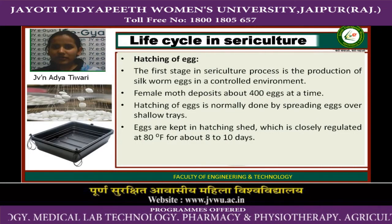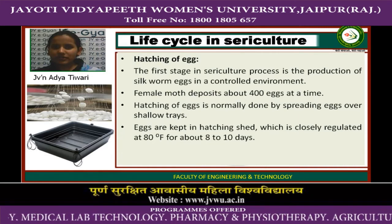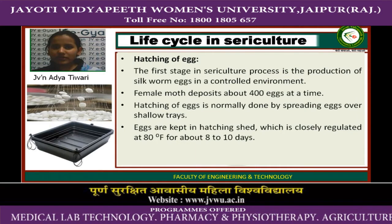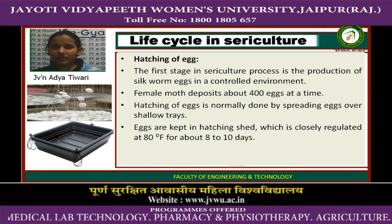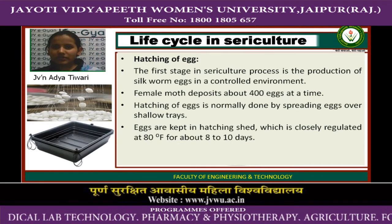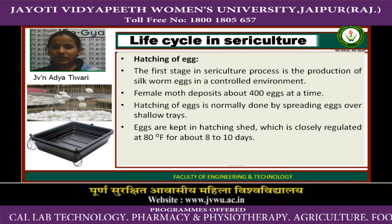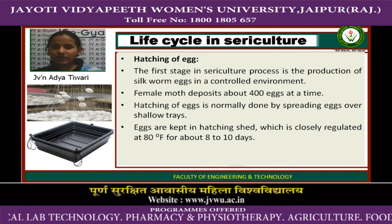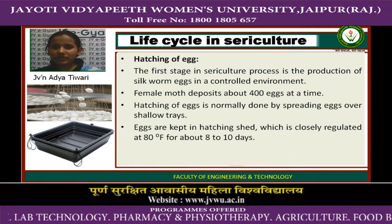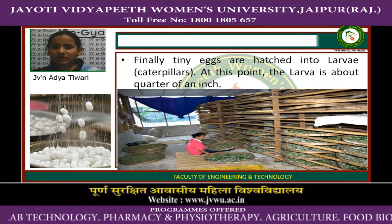Here is the life cycle of sericulture in detail. The first stage of the sericulture process is the hatching of eggs. In a controlled environment, the female moth deposits about 400 eggs at a time. Hatching is normally done by spreading eggs over shallow trays. Eggs are kept in a hatching shade closely regulated at 80 degrees Fahrenheit for about 8 to 10 days.